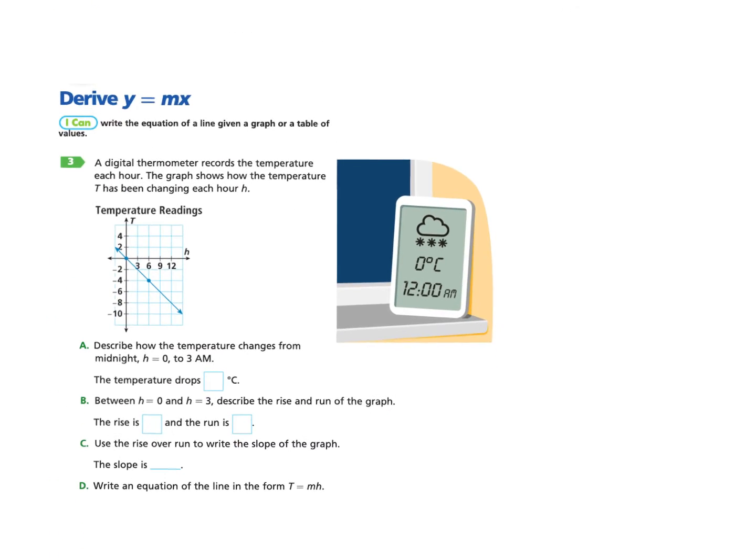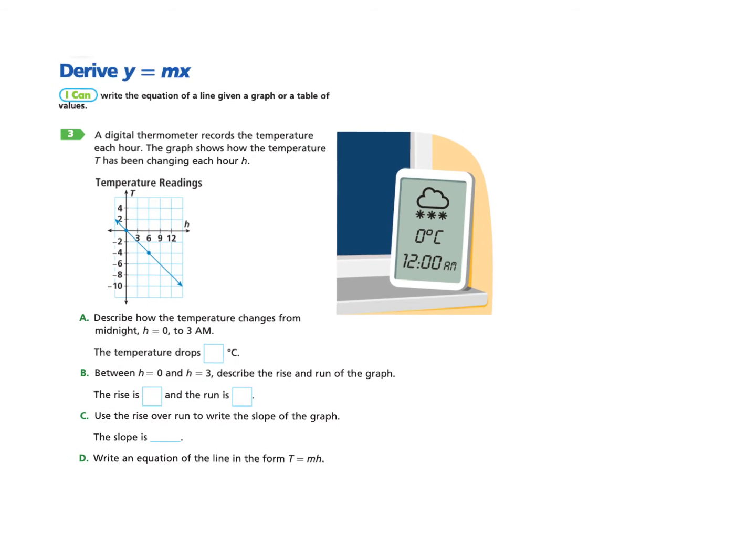Alright, let's jump in and look at an example. Let's take a second and read what the question is about. We have a digital thermometer recording the temperature each hour, and the graph shows how the temperature t has been changing each hour h.